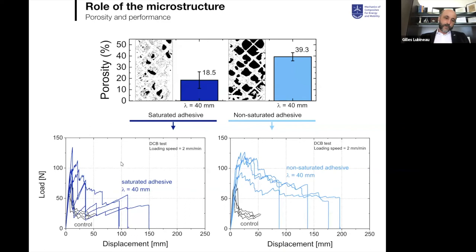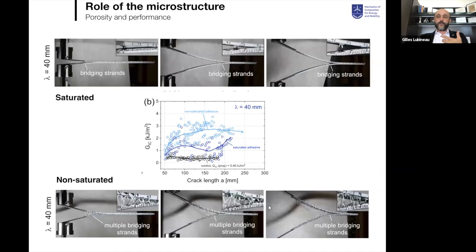The performance of this net is very related to the microstructure of porosities at the interface. Here are two striking examples: one without much porosity — the nylon net is well connected to the epoxy adhesive; and one with a lot of porosities. The response with porosities is much better compared to the control sample or the system without porosities. Porosities give the thermoplastic the freedom to deform and bring ductility to the joint, giving an increasing curve during propagation.